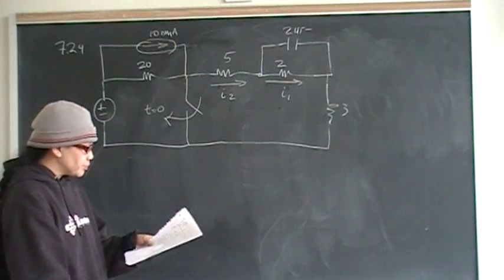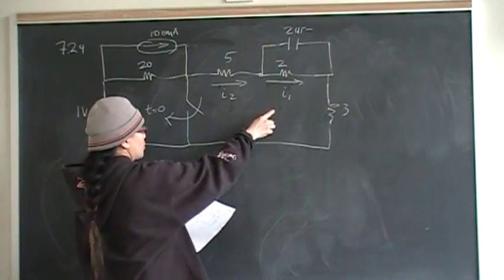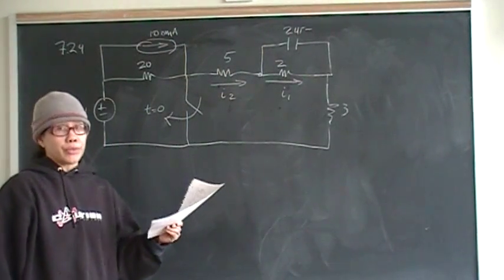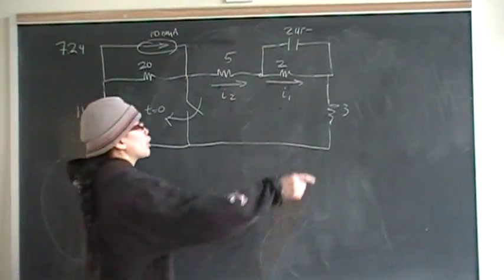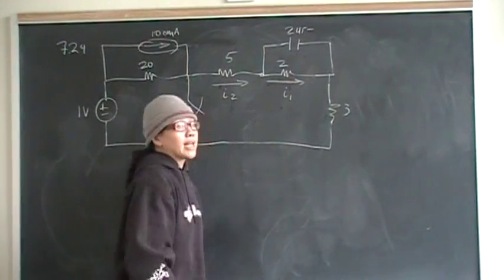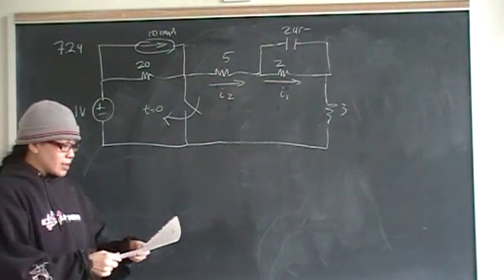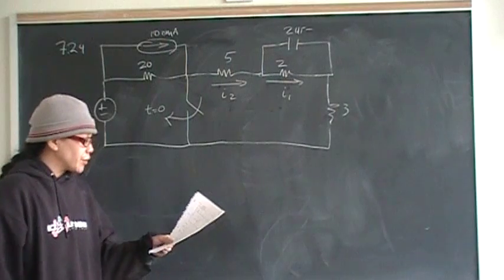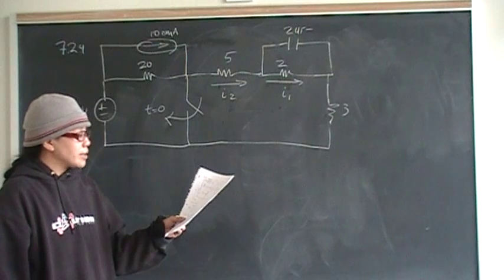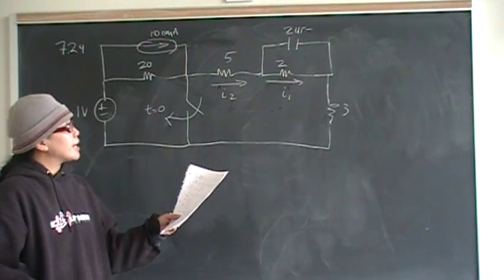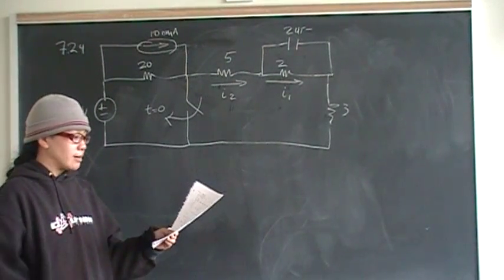For part B, we're looking at I1 and I2 after the switch closes, and they are different. What drives finding the current is the property of the capacitor — what can and cannot change immediately. Once you know that, you can write a KCL equation. For part C, the question is why is current I1 equal to I2 before time zero — again, it goes down to the property of the capacitor.